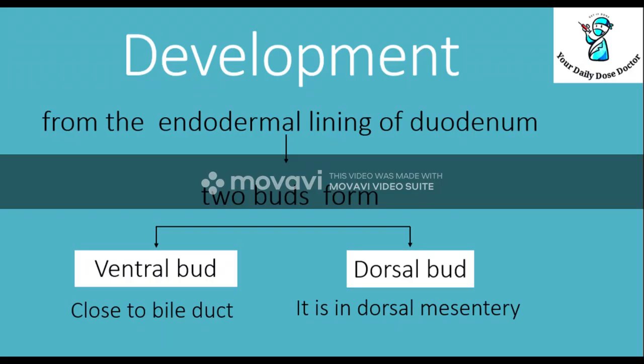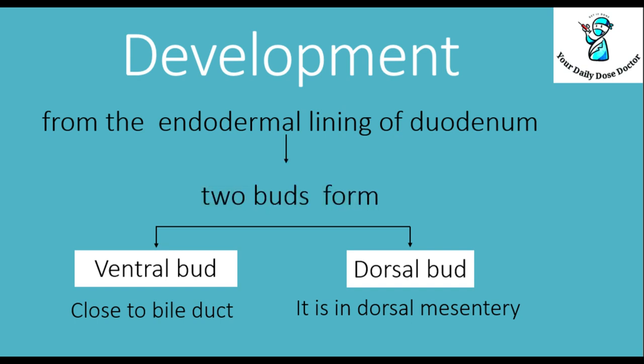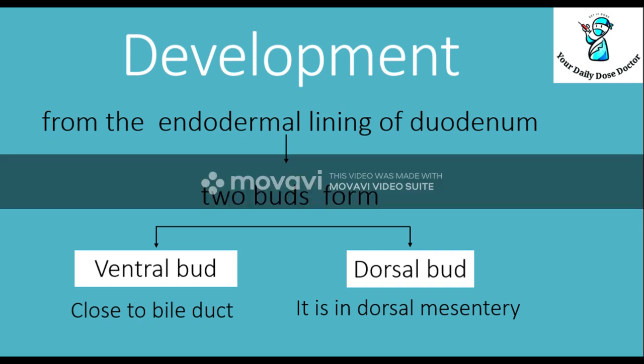The pancreas first appeared at the fifth week of gestation. After the fifth week, two outgrowths — two outpouchings of the endodermal lining of the duodenum, lying just below the stomach, are formed. From the endodermal lining of the duodenum, two buds form: one is called the ventral bud and the second is called the dorsal bud.